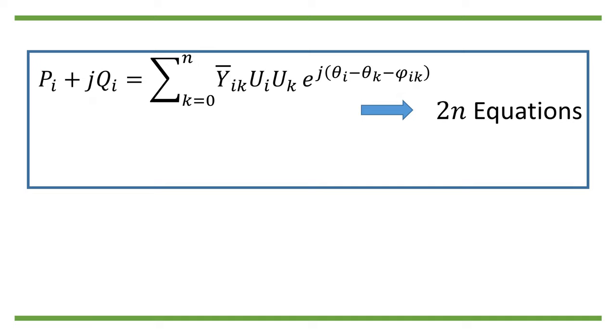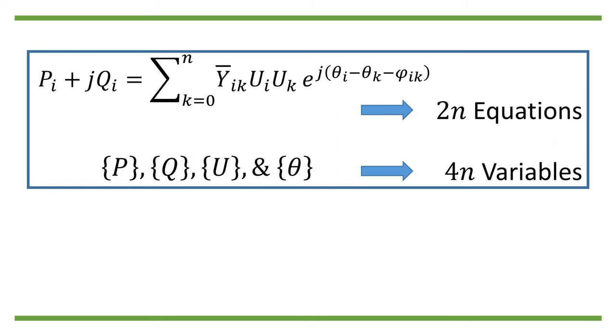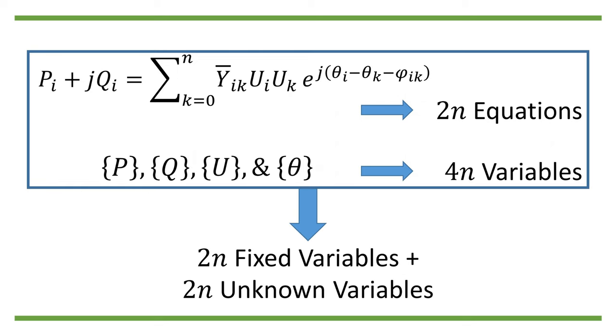So with the complex version of the summation form, we actually will have 2n separate equations and 4n variables, 2n of which must be held fixed in order to solve for the other 2n variables.